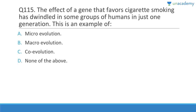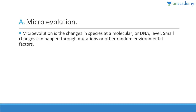Question 115: The effect of a gene favoring cigarette smoking appearing in one generation is an example of micro-evolution, because it happens at the DNA level. Micro-evolution is a change in species at the molecular or DNA level; small changes can occur through mutations or random environmental factors.